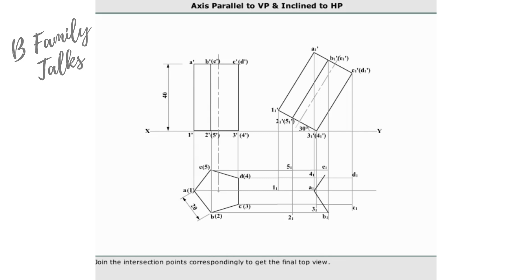Join the intersection points correspondingly to get the final top view. Draw the visible edges by thick continuous lines and invisible edges by thick dotted lines.